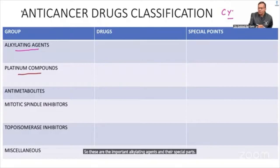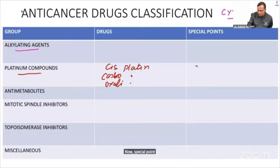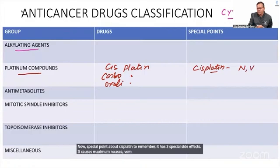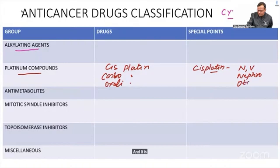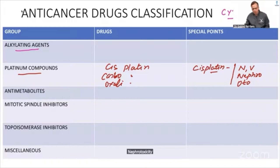Platinum compounds have names ending in '-platin,' such as cisplatin, carboplatin, and oxaliplatin. Cisplatin has three important side effects to remember: it causes maximum nausea and vomiting, it is nephrotoxic, and it is ototoxic.